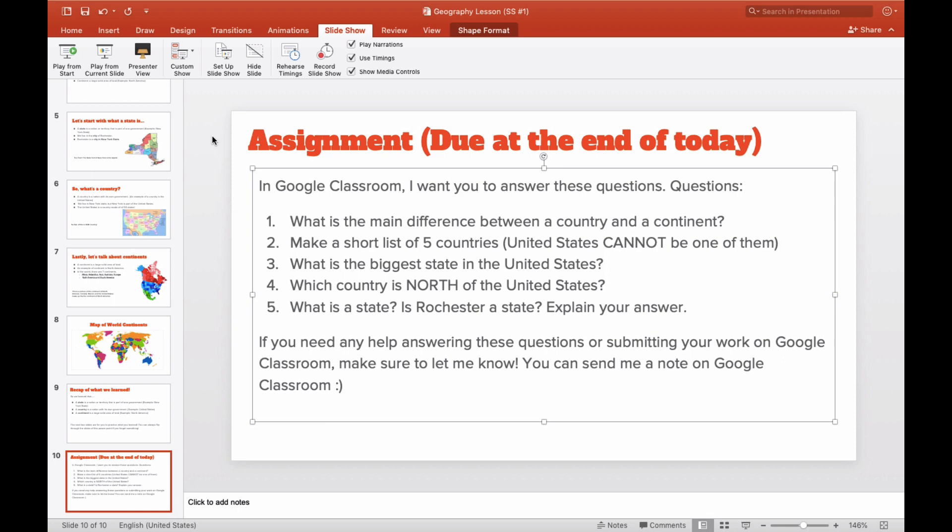So in Google Classroom, you are able to open a Google document. I'm going to have some instructions up in the classroom for how to do that. So it's just five questions. First one, what is the main difference between a country and a continent? We just explained this. You can even go back to the video and write it down. That way you have it somewhere that you can see it. Two, make a short list of countries. The United States cannot be one of them. So I don't want you guys to, you know, that's kind of easy. We know that the United States is a country. So you guys can go on Google and search up just five countries.